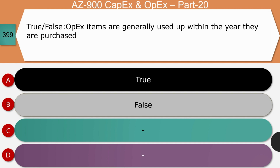True or false: Operating expenses are generally used up within the year they are purchased. The right answer is true. Operating expenses are the funds that support your day-to-day business. OpEx items are generally used up within the year they are purchased — examples include consumables such as printer cartridges, paper, electricity, and other supplies.